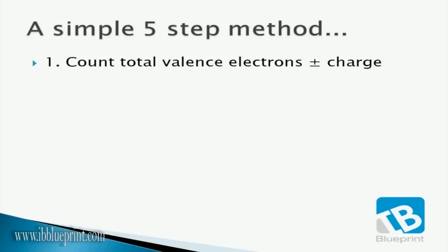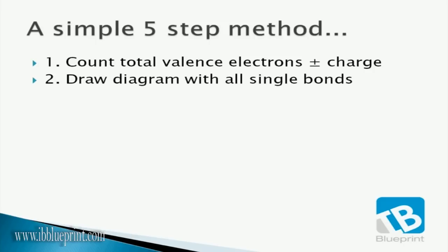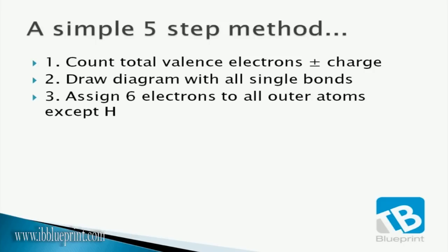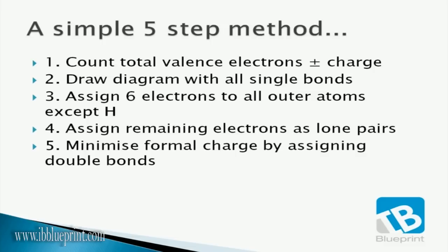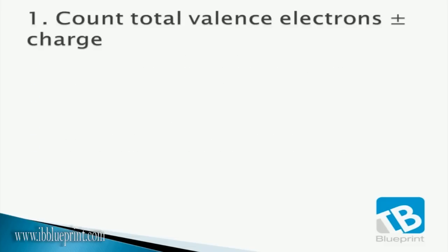Step 1: count total valence electrons plus or minus the charge. Step 2: draw the diagram with all single bonds. Step 3: assign six electrons to all outer atoms except hydrogen. Step 4: assign remaining electrons as lone pairs. And finally, Step 5: minimize formal charge by assigning double bonds.